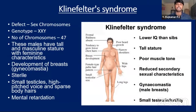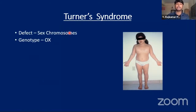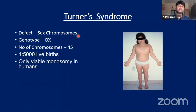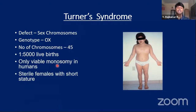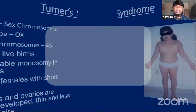Turner's syndrome details from the slide: the defect is in sex chromosomes and the genotype is XO — one X is lost, so the chromosome number is reduced to 45. It occurs in about one in 5000 live births and is the only viable monosomy seen in humans. These women are sterile females with short stature; breasts and ovaries are underdeveloped, and pubic hair is absent.